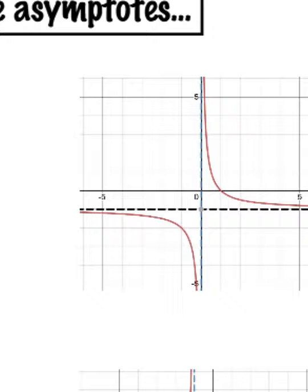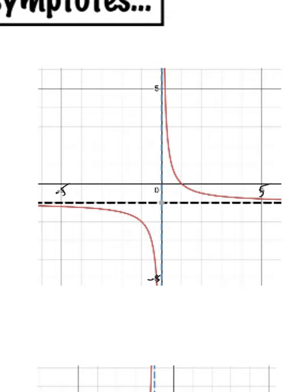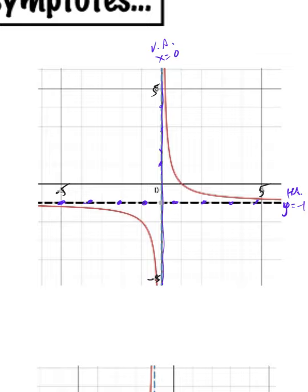Moving over here — this graph goes from negative 5 to 5. The vertical asymptote this time is right on the axis, so the vertical asymptote is at x equals 0, because x is 0 for all values on this asymptote. The horizontal asymptote here would be at y equals negative 1, because the x changes but the y is always negative 1 for these points.